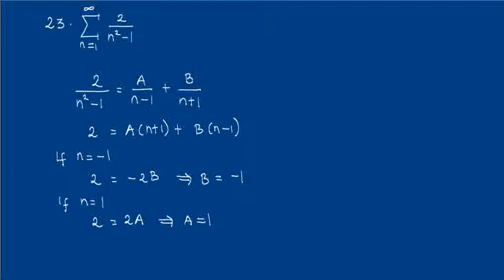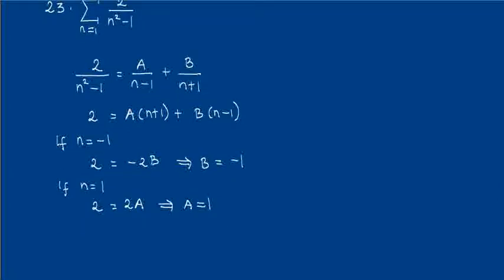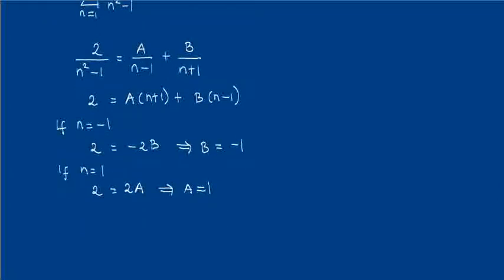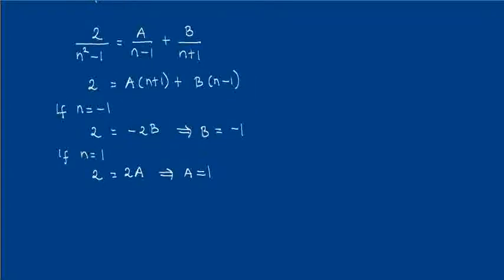So this says that 2 over n squared minus 1, the conclusion is that 2 over n squared minus 1 can be written as 1 over n minus 1 minus 1 over n plus 1.